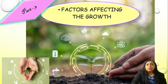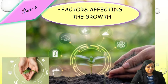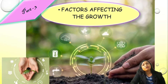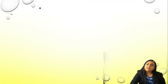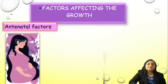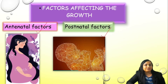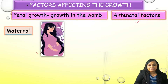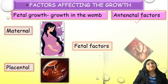Now let us discuss what are the factors which can affect growth. Just as a plant requires air, sunlight, water, nutrients, and soil for growth, similarly the growth of a child requires lots of things, starting from the preconceptional period. Mainly there are antenatal factors and postnatal factors. If you divide the antenatal factors, again there will be three things: either it is maternal, or placental, or it is a fetal factor. The postnatal growth depends on six factors.